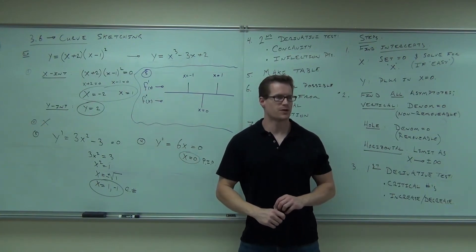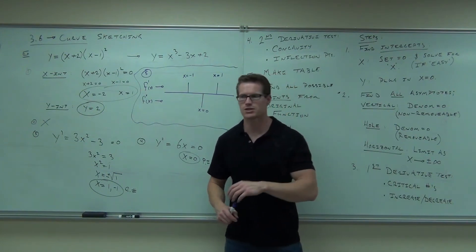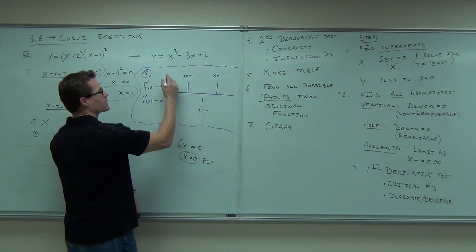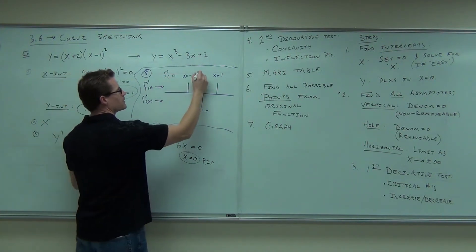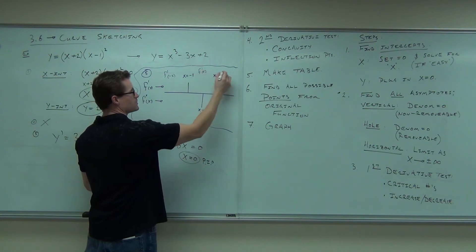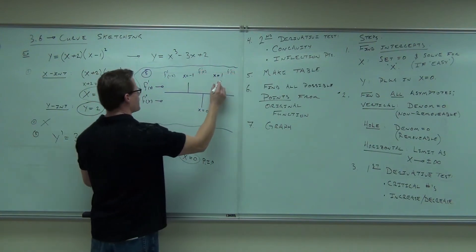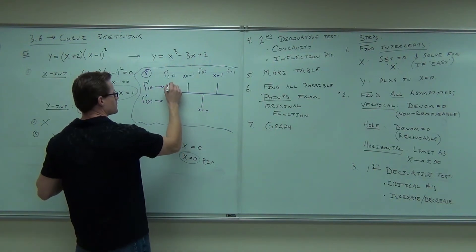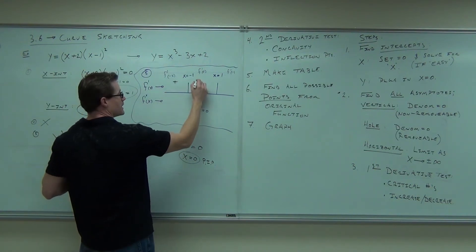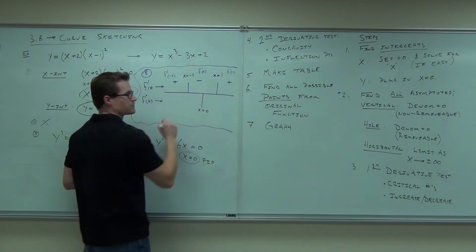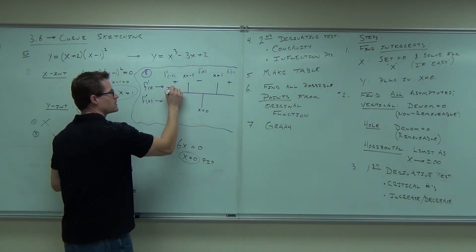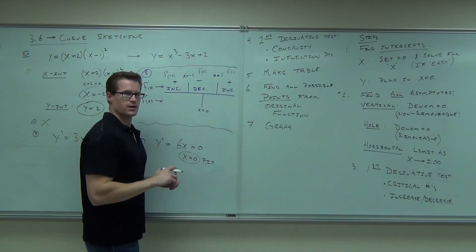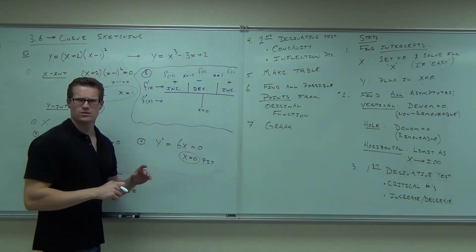Fill that table out for next time because that's where I'm going to start next time. If you want to hang out for a second, I'll do it right now. For this one, if I plug in f prime of negative two, if I plug in f prime of zero, and f prime of one, I'm doing my first derivative. I'm going to get positive, I'm going to get negative, and I'm going to get positive. That means increasing, decreasing, increasing. You follow me on that?